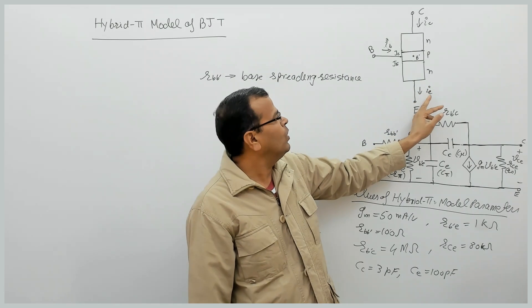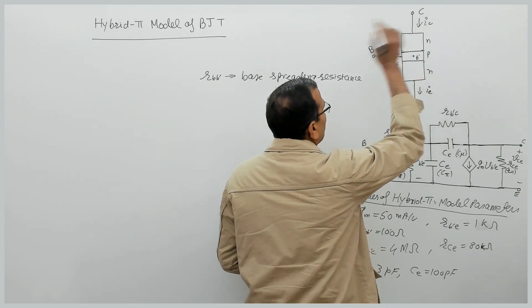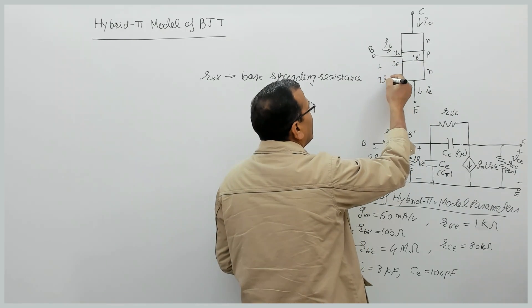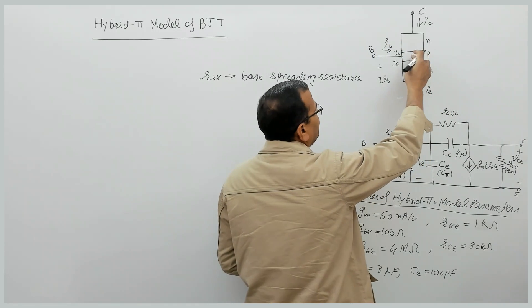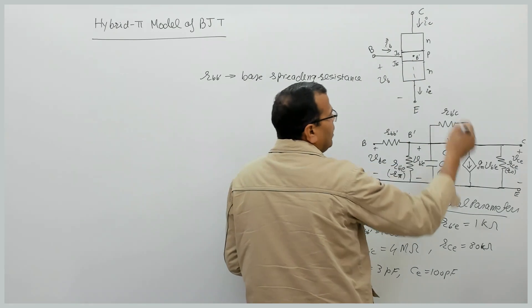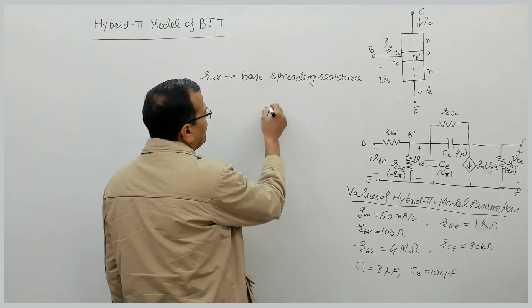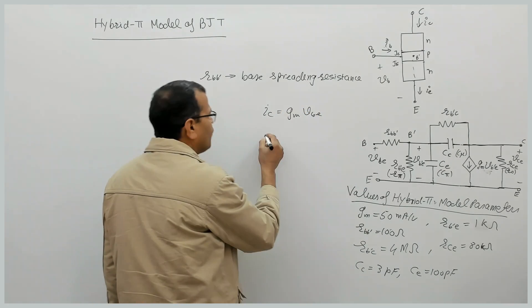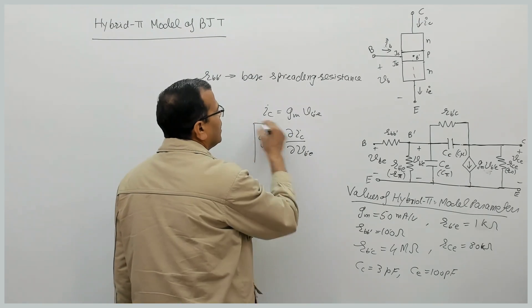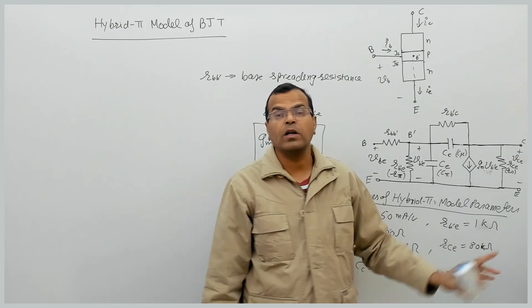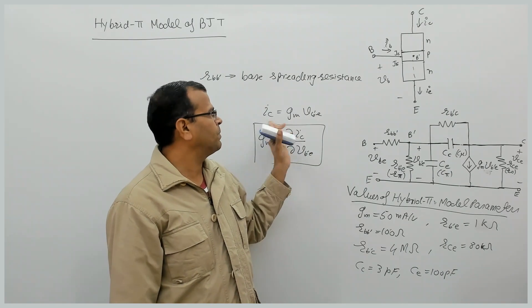On the output side, the collector current is related to the base current. Instead of IC = β·IB, there is a relationship between IC and V_B'E: IC = GM × V_B'E, where GM is the transconductance. Mathematically, GM is the variation of IC with respect to variation in V_B'E — delta IC / delta V_B'E.